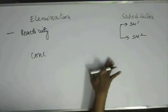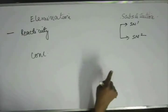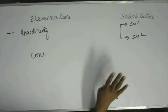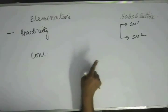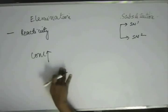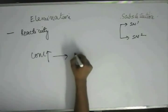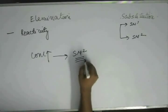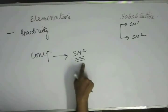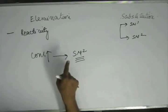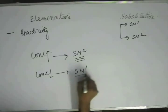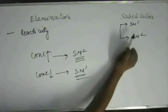In SN1, first the carbocation is formed, then the nucleophile comes in. That means in the RDS, the nucleophile is not present, so changing the concentration will not alter the rate of reaction for SN1. If we increase the concentration — once we have moderated reactivity for substitution — then SN2 will be favored. We can reach SN2 by controlling reactivity and then increasing concentration. We can reach SN1 by controlling reactivity and then decreasing concentration — if we decrease the concentration, SN1 will be favored. So we can zero down to SN1 or SN2.